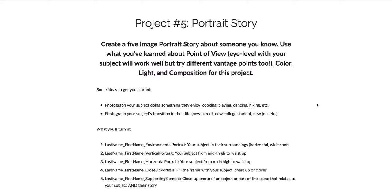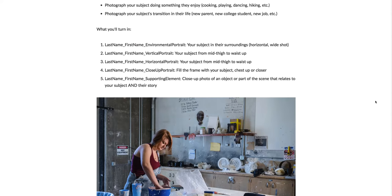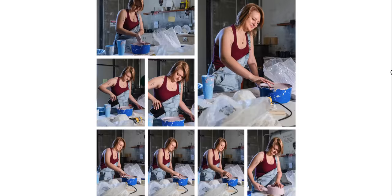You're going to use what you've already learned about point of view, color, light, and composition. Some ideas to get you started: photograph your subject doing something they enjoy, such as cooking, playing, dancing, or hiking. Or you could photograph your subject's transition in their life - whether it's being a new parent, new college student, a new job. What you're going to turn in is an environmental portrait, a vertical portrait, a horizontal portrait, a close-up portrait, and a supporting element.